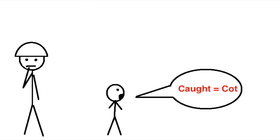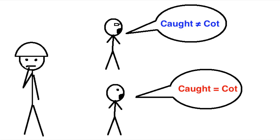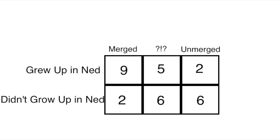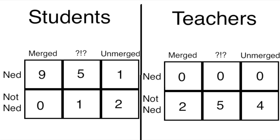Also I thought it might be the case that students tend to say them the same while teachers say them differently, and that did end up being true to an extent, but I also asked people where they came from, and exhibiting the merger is much more closely correlated with growing up here in Nederland than it is to being a student. So the fact that teachers tend to have the vowels unmerged while students tend to have them merged is probably just because teachers are much more likely to have grown up in some other state.